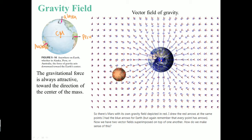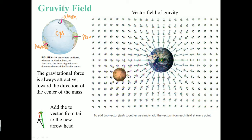Now let's introduce Mars. Mars has its own gravitational field, so at every single dot I draw a red arrow pointing towards Mars. We have the vector field in blue describing the gravitational field of Earth, and red for the gravitational field of Mars. If we have two different vectors, we can add them — vector addition, tail to head — and get the vector sum. The green is the result of adding those two vectors: the blue Earth field and the red Mars field. This is what it looks like.